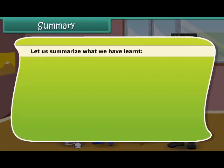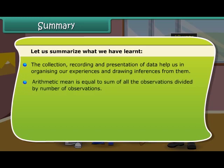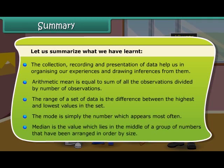Let us summarize what we have learned. The collection, recording and presentation of data help us in organizing our experiences and drawing inferences from them. Arithmetic mean is equal to the sum of all the observations divided by the number of observations. The range of a set of data is the difference between the highest and lowest values in the set. The mode is simply the number which appears most often. Median is the value which lies in the middle of a group of numbers that have been arranged in order by size.